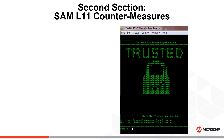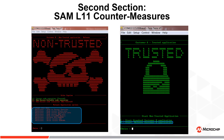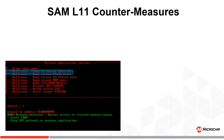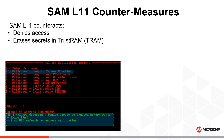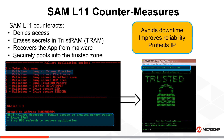Now let's look at the second section of the demo — SAM L11's countermeasures to malware and physical attacks. When choosing M, the malware is loaded and provides the user with various malware emulation choices. SAM L11 counteracts each of these malicious attacks. Selecting Option 1 emulates malware attempting to access a secure function in the trusted zone. SAM L11 counteracts by denying access, erasing the secret keys in the trust RAM, and recovering the application by securely booting into the trusted zone. This avoids downtime of critical functions and improves system reliability while protecting the IP.